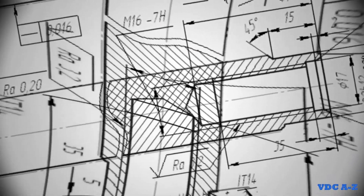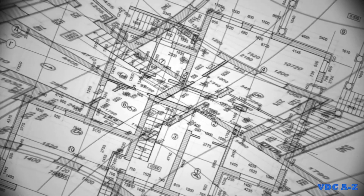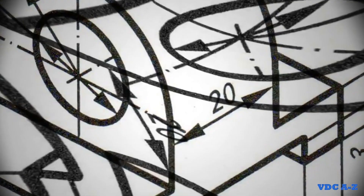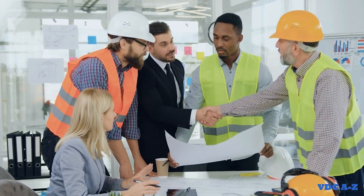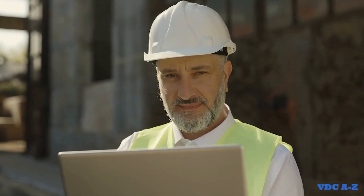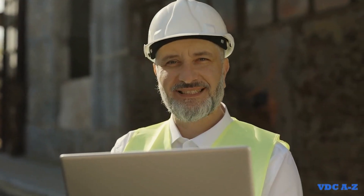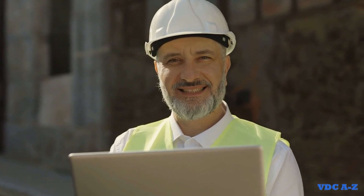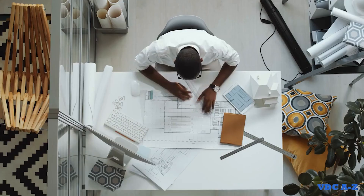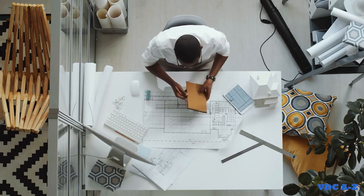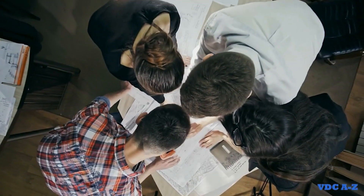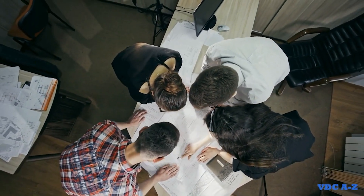BIM coordination also improves the documentation process for construction projects, which was historically riddled with discrepancies, leading to confusion on-site. BIM addresses this challenge by generating documentation directly from the coordinated model. Accurate documentation also translates to better construction accuracy, as contractors can trust that what they are building aligns precisely with the design. In the construction of a new building project, the architectural, structural, and MEP drawings are traditionally created separately. Discrepancies and conflicts between these drawings are common, leading to confusion during construction.